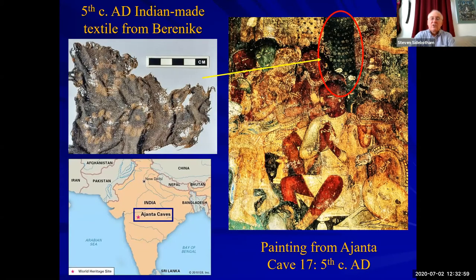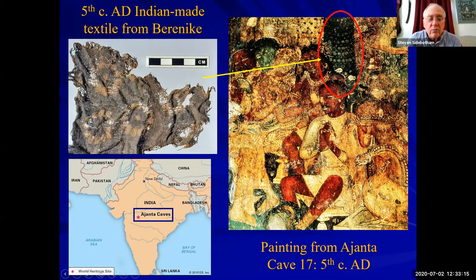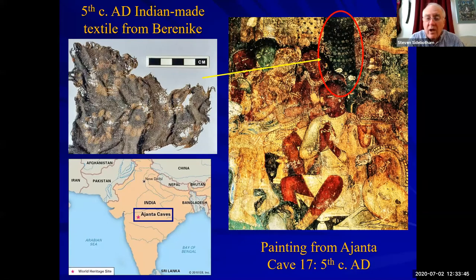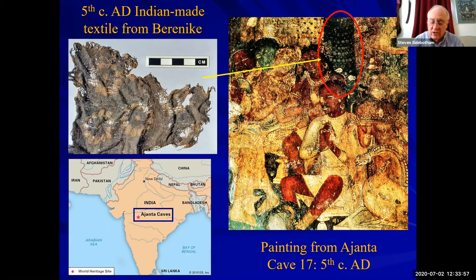We have lots of textiles from the site. While many are Egyptian or Mediterranean made, we have a lot of Indian made ones as well. This more interesting one comes from a fifth century AD trash dump at Berenike. It's a resist-dyed textile — you can see the rosette pattern — and there is a very close parallel for it in Ajanta Cave number 17, also from the fifth century AD. So clearly, they were manufacturing this type of textile with this decoration in India at this time. I've also seen examples in China along the Silk Road, suggesting the Indians were mass producing this material and exporting it not only to the Mediterranean world but north into China, and possibly into Southeast Asia as well.